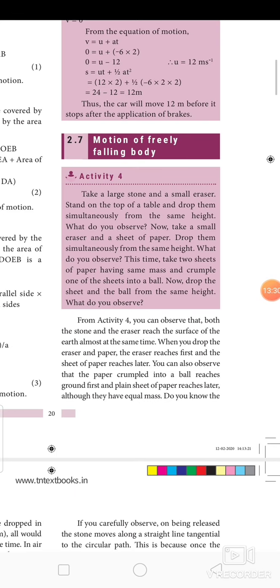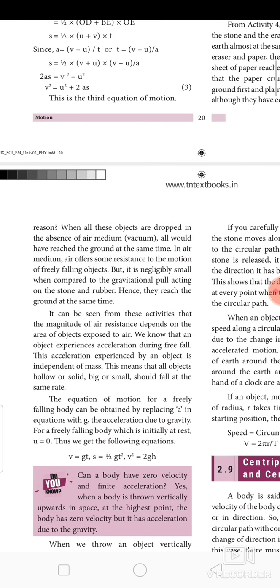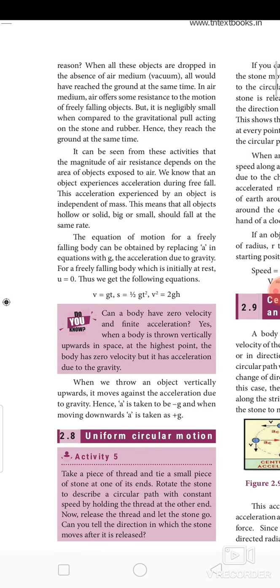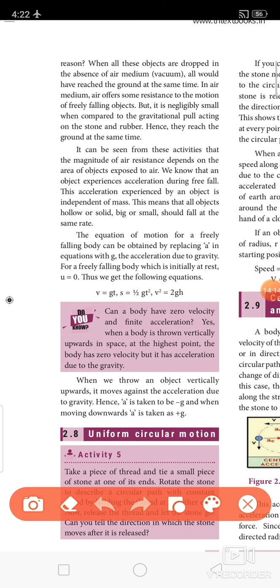Next, we consider the motion of a freely falling body. In the three equations of motion, A represents acceleration. If a body falls freely, that acceleration is due to gravity, so substitute G in place of A. Also, for a freely falling body, the initial velocity U = 0. Substituting U = 0 and A = G gives the modified equations of motion for free fall.